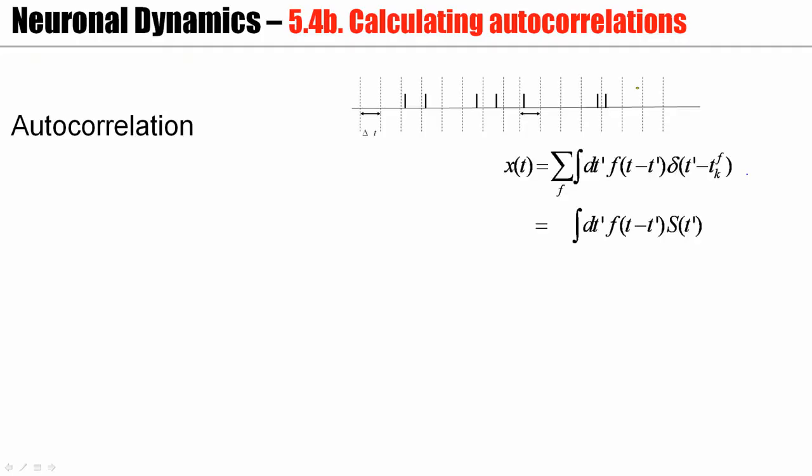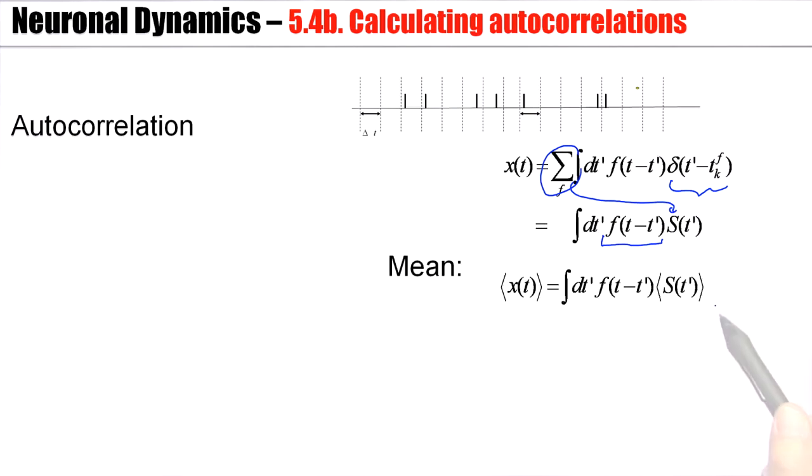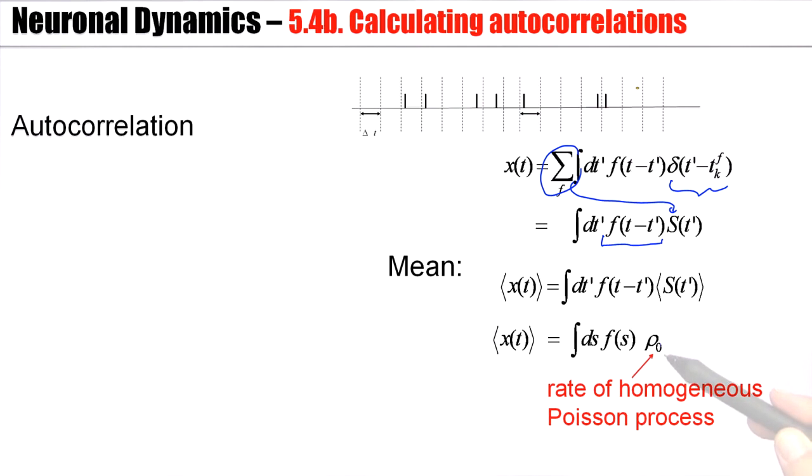In the previous lecture, I've already said that any filtered spike train can be treated with a formalism where I have an arbitrary filter f. This is the spike train, including the sum of all spike times. And if you look at the mean, then this is the mean of the spike train. And for the case of a homogeneous Poisson process, this would be the rate. That's the rate of this spike train. We don't consider k independent inputs anymore. Let's consider just one single input spike train, s of t.